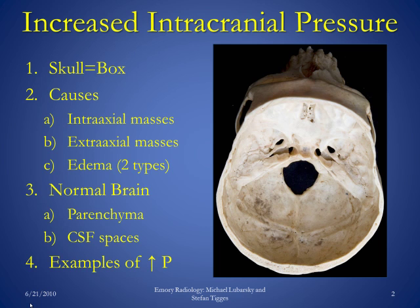Extraaxial masses are another cause — extraaxial meaning inside the skull but outside the brain. This mass will occupy volume and compress the brain from the outside. Another cause is edema, which increases the volume of the brain itself by increasing water content. There are two types of edema: one where the water content of the brain cells is increased, and another where the interstitial volume between the brain cells is increased.